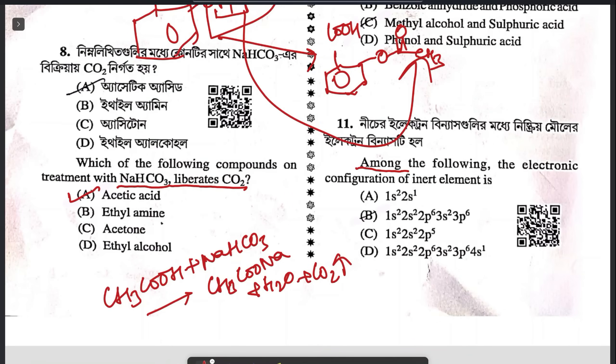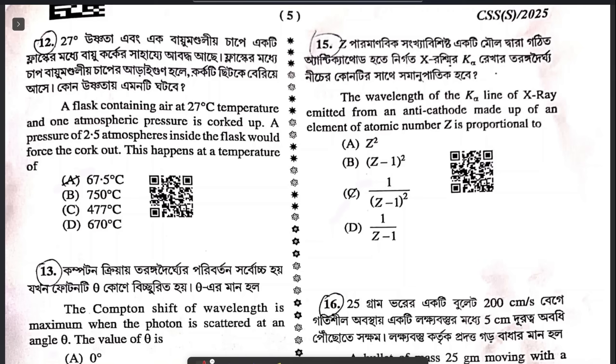Question 11: among the following, the electronic configuration of an inert element. The only possible answer is option B — it is basically argon, atomic number 18.